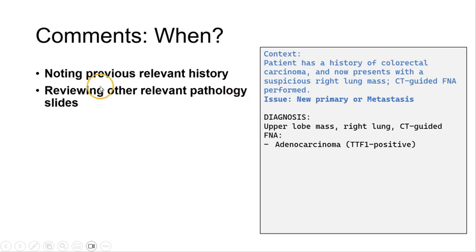Let's look at this example where we are noting previous relevant history. The context is a patient with a history of colorectal carcinoma now presenting with a suspicious right lung mass with a CT-guided lung FNA. And of course, the clinical issue is, is this a new primary or is this metastatic colorectal carcinoma?